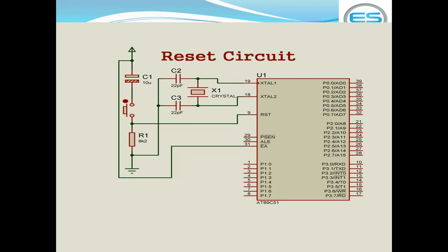Before proceeding with microcontroller interfacing, you should understand the minimum components required. Across pins 18 and 19, you need to connect a crystal oscillator to generate clock cycles, which are used for program execution. In series, connect two capacitors to filter noise. Pin 9 also requires an RC combination as a reset button, which provides a time constant for the microcontroller to reset. Pin 31 is connected to VCC to disable external access memory.